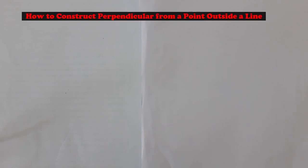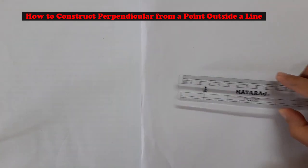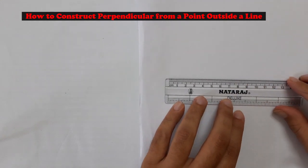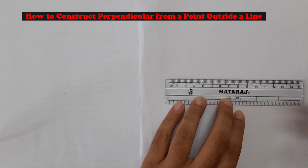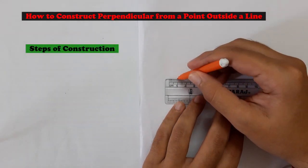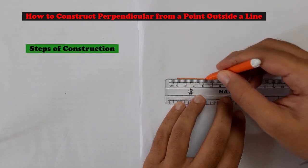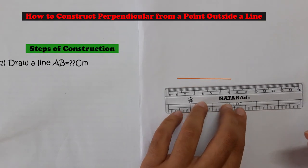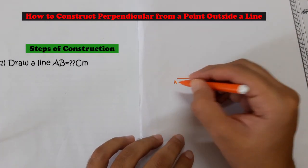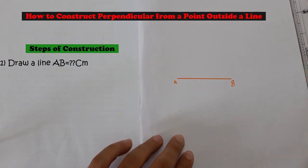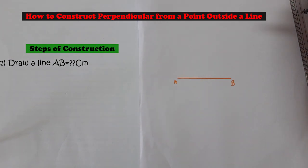How to construct perpendicular from a point which is outside the line. As you can see the topic, we are going to see a perpendicular from outside the line. So let's say we have one line, you can draw any line which is given in the question and take it random.